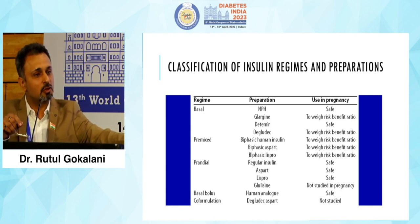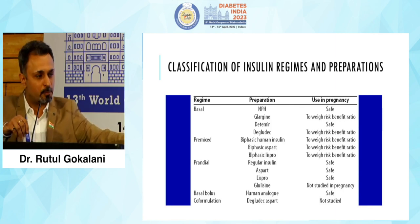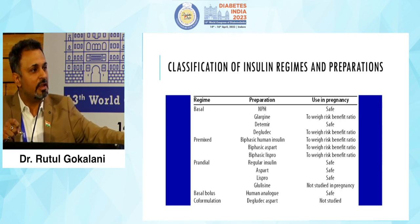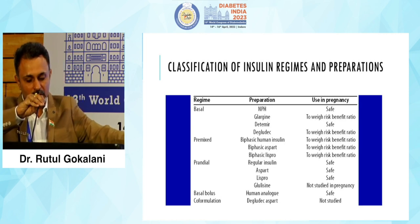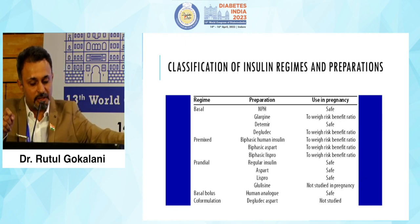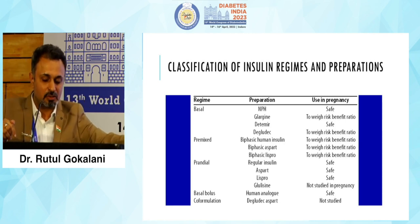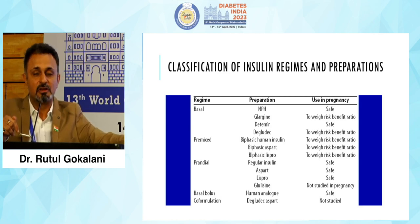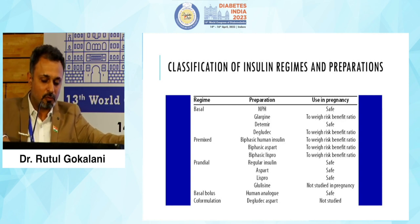As this classification shows, during pre-conceptional care you can use any insulin, but ideally switch to insulins approved during pregnancy. For basal insulin, only two options are approved: detemir and degludec. NPH is approved but newer generation insulins are preferred. Premix insulin should not be advised at all. For prandial insulin, the approved options are aspart, lispro, and regular human insulin. Glulisine is not approved in pregnancy. FIASP is new in the line and can be used.